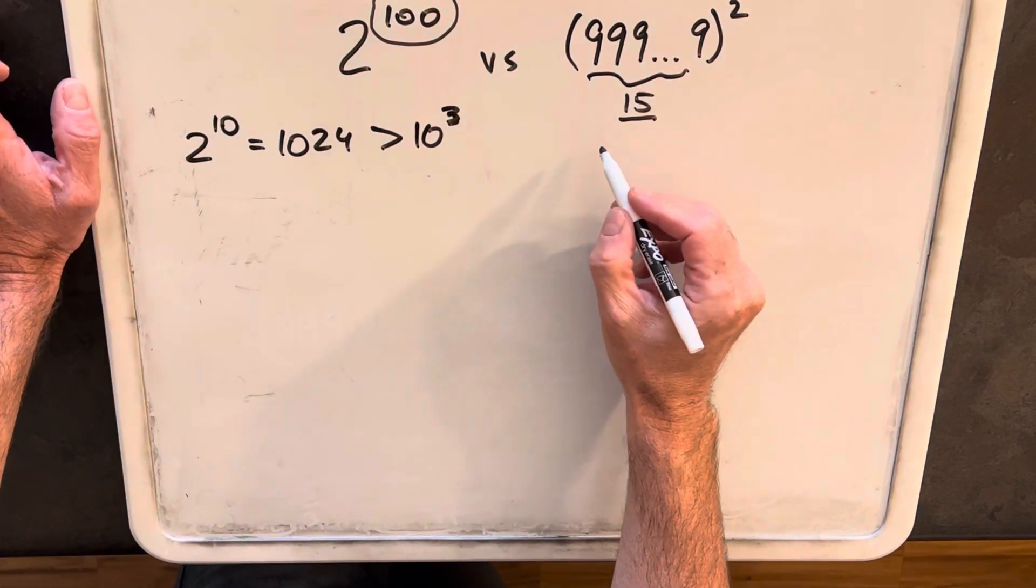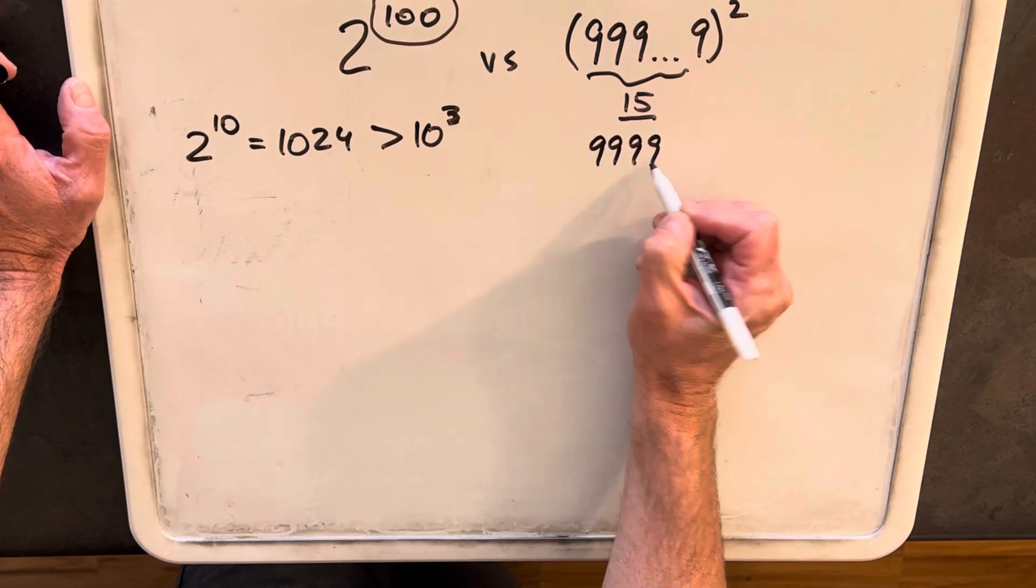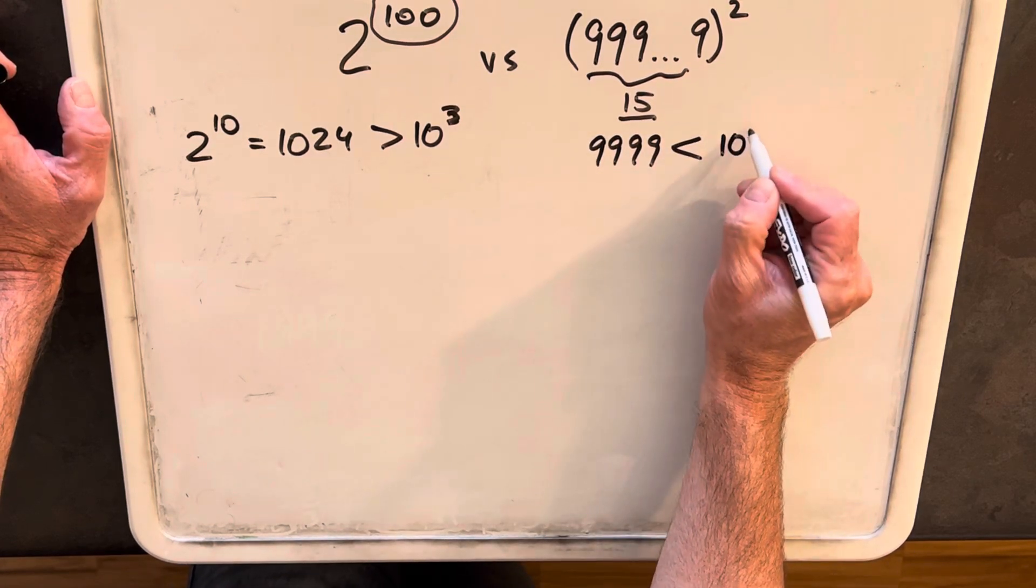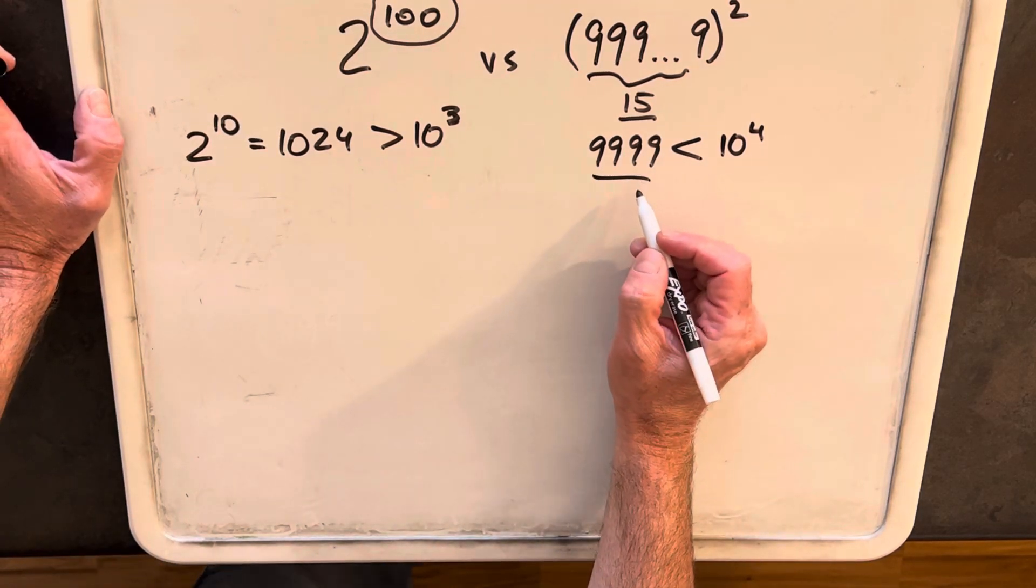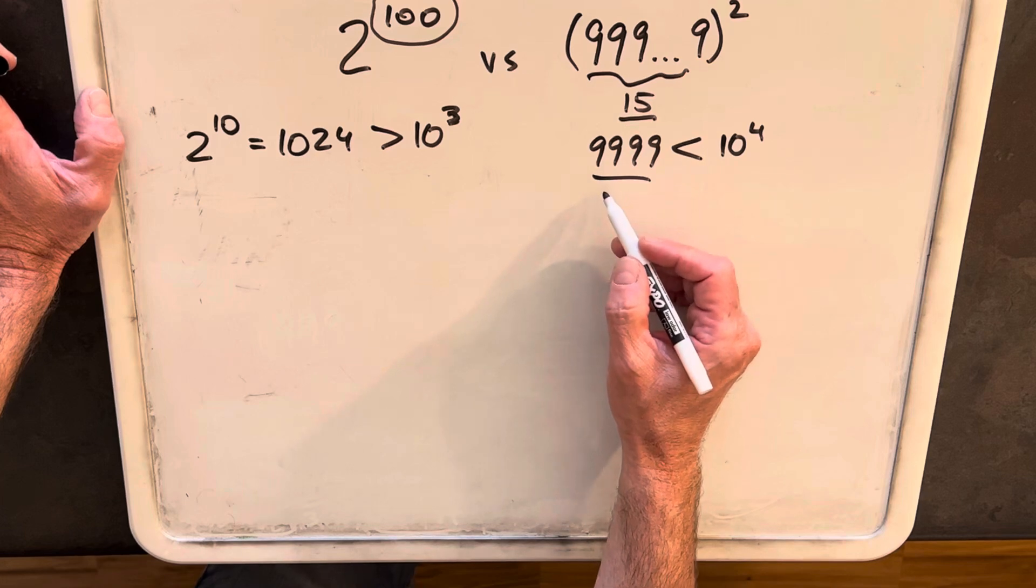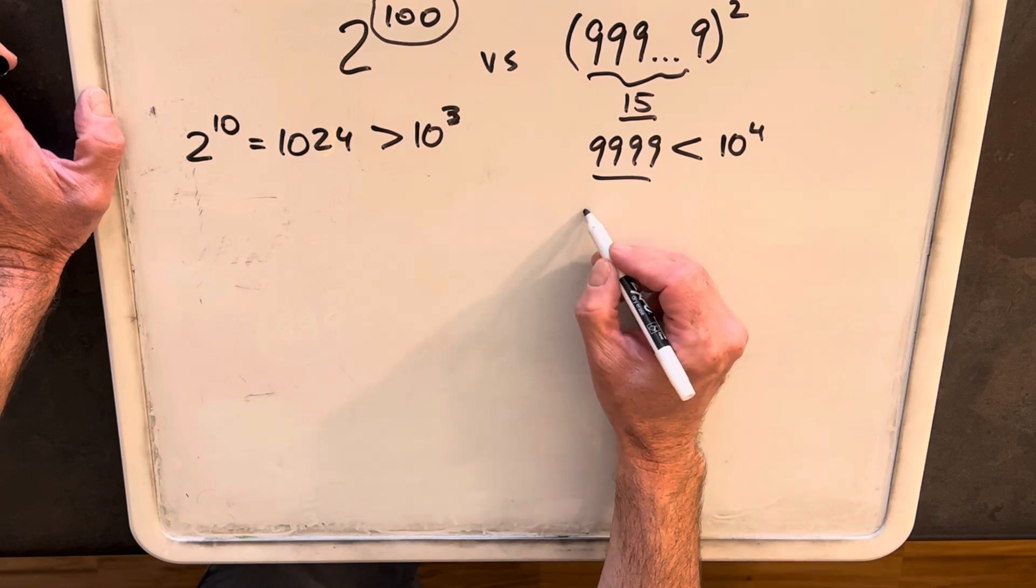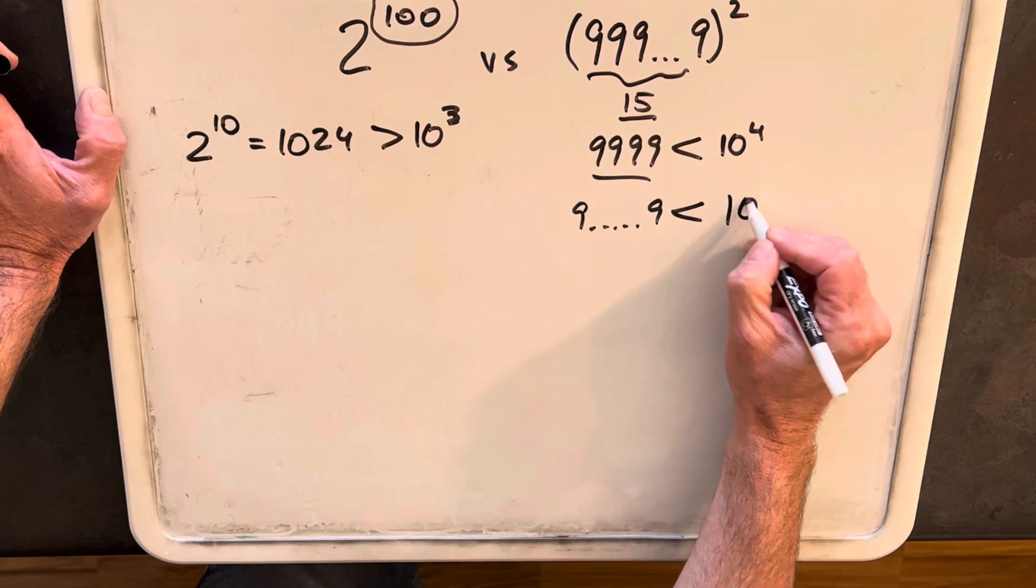We also know that we found that 9, 9, 9, 9 was less than 10 to the 4th. So you see this is 4 nines, and so that's going to be true with however many nines we do. So if this is 15 nines long, this is going to be less than 10 to the 15.